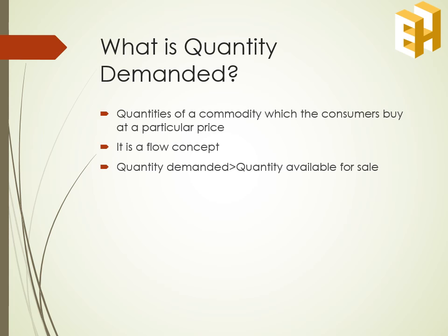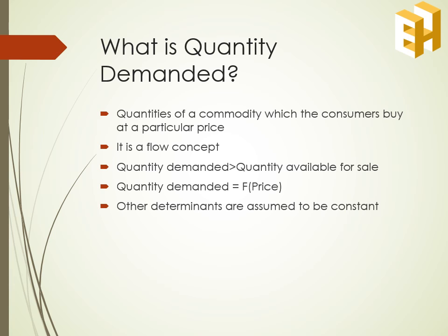This is the reason why a price can be determined for a commodity. Quantity demanded is a function of price, assuming that the other determinants like income, tastes and preferences, etc. are assumed to be constant. There is a negative relationship between price and quantity demanded — higher the price, lower will be the quantity demanded.